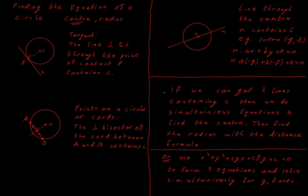Restating: if we can get two lines that contain the center, we do simultaneous equations to find the center, then use the distance formula to get the radius. That's the geometric approach. There's also an algebraic approach: if we know three points on the circle, we can use the general equation of the circle, substituting each point's X and Y values to create three equations involving G, F, and C, then solve three simultaneous equations with three unknowns. Sometimes this method is quicker, but the algebra gets messy — the geometric method is what I strongly recommend.